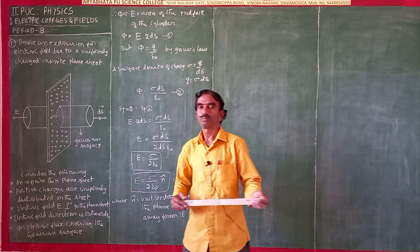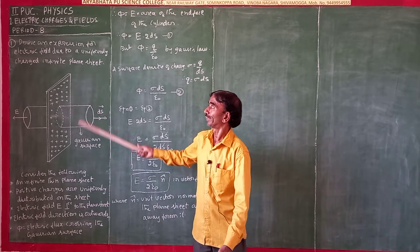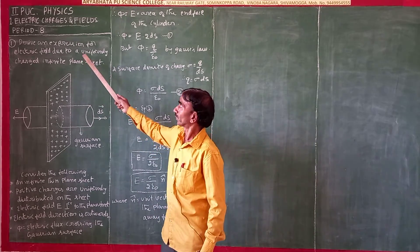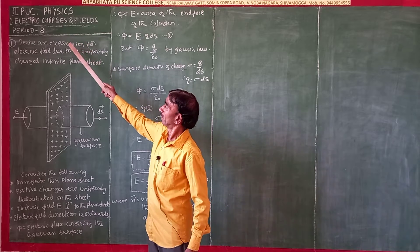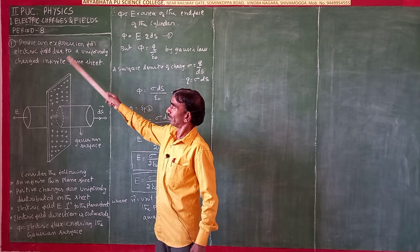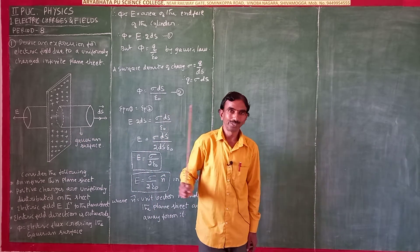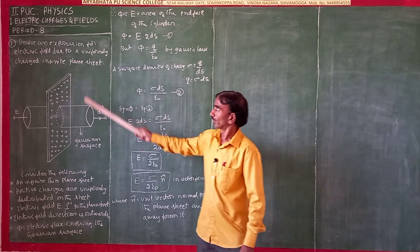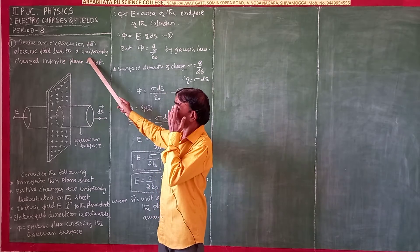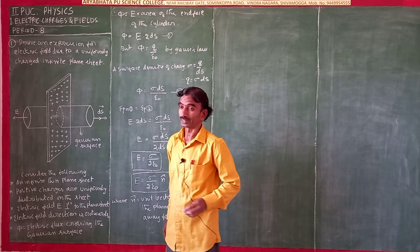Welcome to the R.A. Bata PO Science College. Now we are going to study the 8th period — the 8th period of the first chapter: Electric Charges and Fields. In this 8th period, there is only one derivation: the expression for electric field due to a uniformly charged infinite plane sheet.